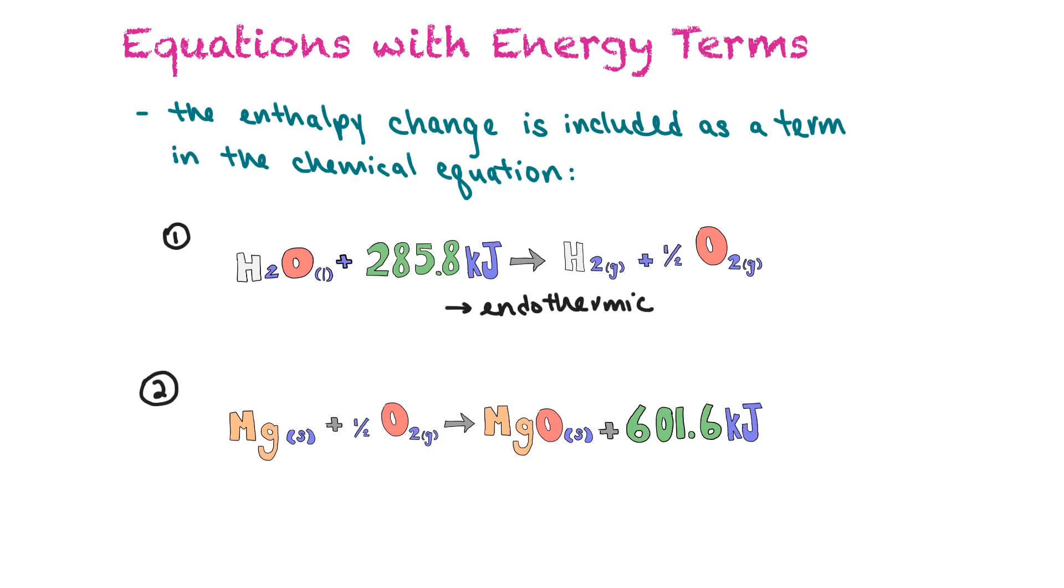The second one, we have solid magnesium reacting with oxygen to make magnesium oxide and a production of 601.6 kilojoules. This example is exothermic because it's releasing energy. Any time that you see the energy term in the reactant side, that would be an endothermic reaction. And if you see the energy term in the product side, that would be exothermic.